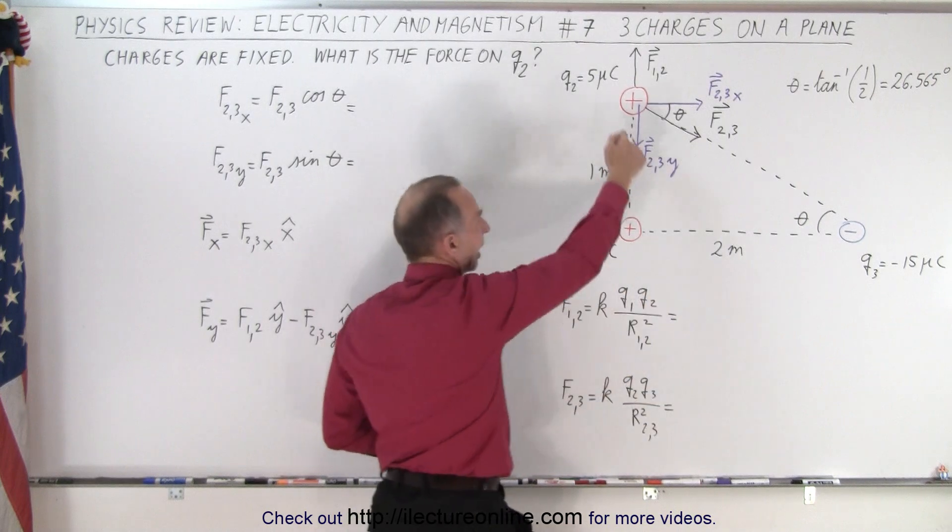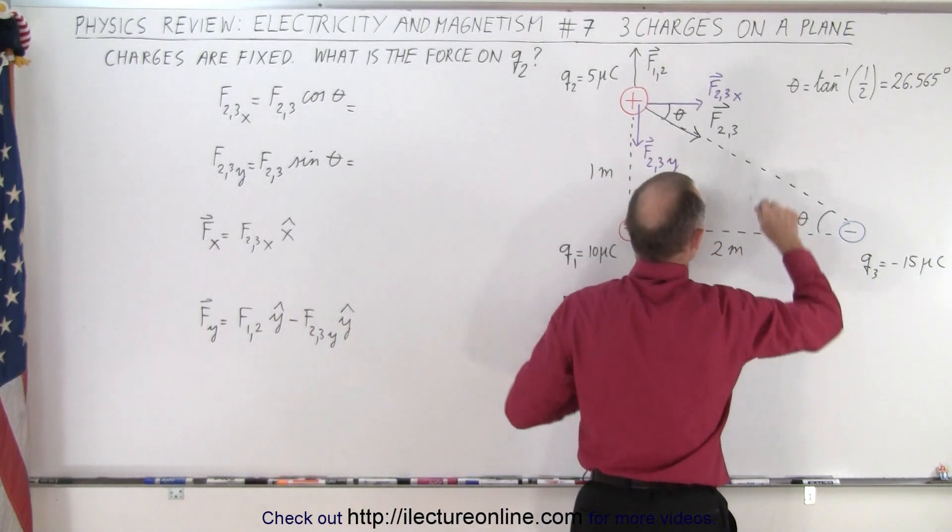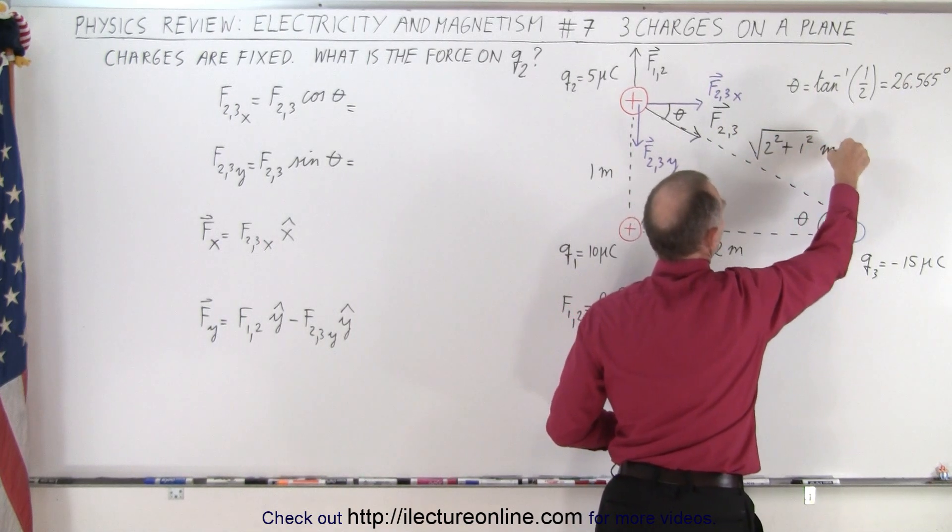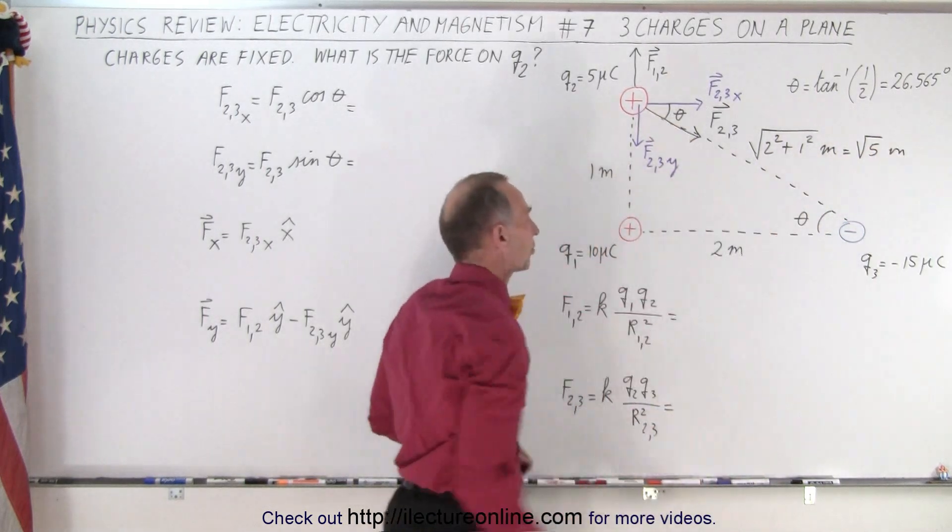We need to know the value for this hypotenuse, so we use Pythagorean theorem, so we know that this is equal to the square root of 2 squared plus 1 squared in meters, so it is equal to the square root of 5 meters. So that would be the diagonal distance right there.